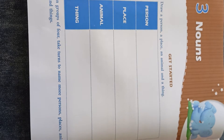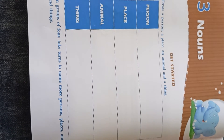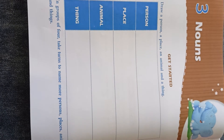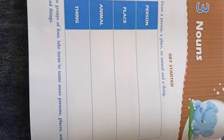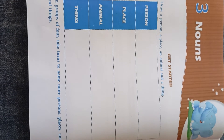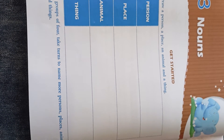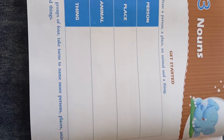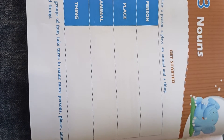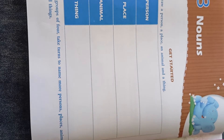At first let us understand what is a noun. A noun is a naming word. The people around us, animals, places and things all have names. So everything around us has a name. These names help us to identify or differentiate between people, place, animal or thing.